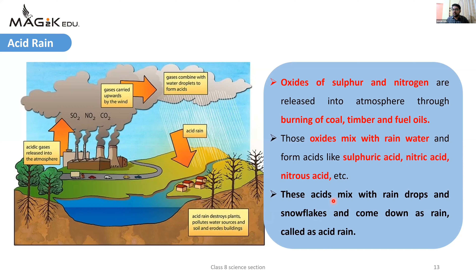This acid mixes with rain drops and snowflakes and comes down as rain - this is called acid rain.